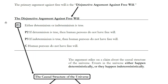P1 says either determinism or indeterminism is true. In this video we'll largely be focused on determinism, but notice there are two options. P2 says that if determinism is true, then human persons don't have free will. P3 says if indeterminism is true, then human persons do not have free will. So the conclusion is: human persons do not have free will.